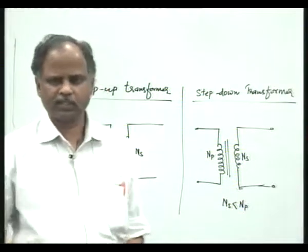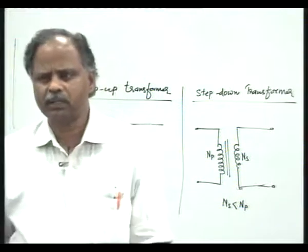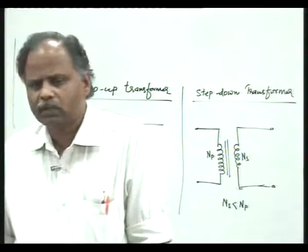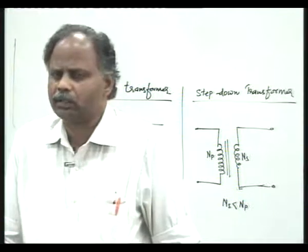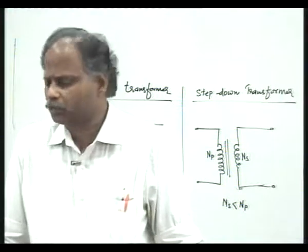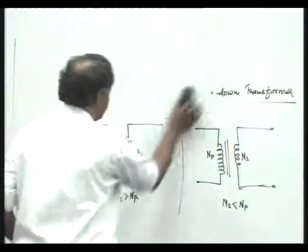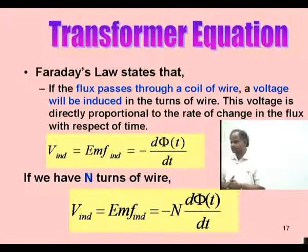We have now studied transformer construction, transformer working operation or principle of operation, and the transformer symbol. Now we can go ahead with the transformer EMF equation, which is very important for examination purposes. Faraday's law states that if flux passes through a coil of wire, a voltage will be induced in the turns of wire. This voltage is directly proportional to the rate of change of flux with respect to time.